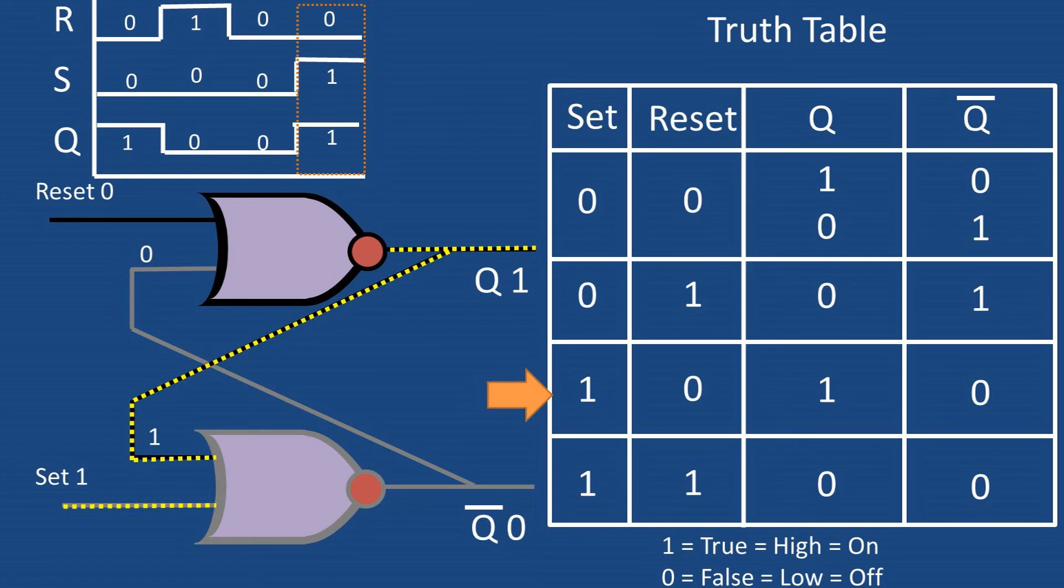Going back to the beginning of the waveform, once the set value goes back to zero the latch remains at a Q logic one state until a reset value of one is sent to the system.